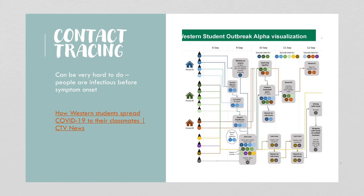Epidemiology involves contact tracing to figure out if you've been exposed to a virus. This can be very difficult because people are often infectious before they have symptoms. During COVID-19, super spreader events occurred where one person infected many others, who then spread the virus further before knowing they were sick — in sporting events, universities, and other settings.